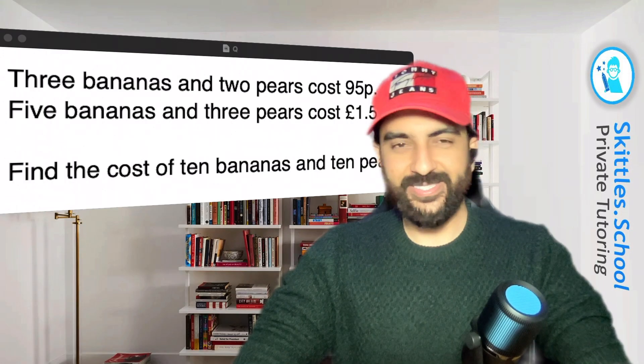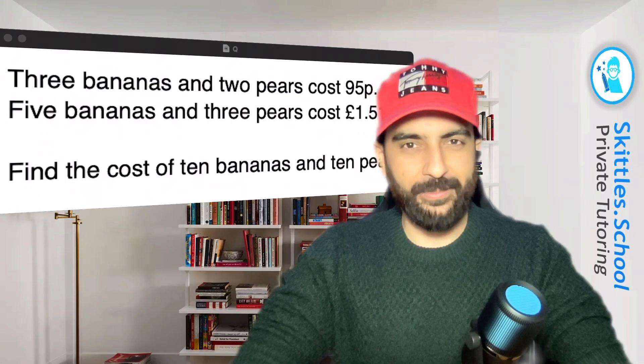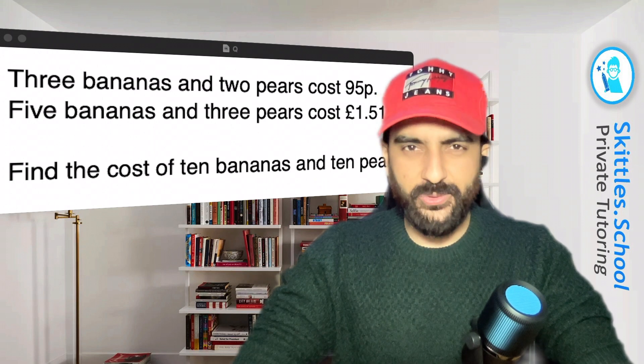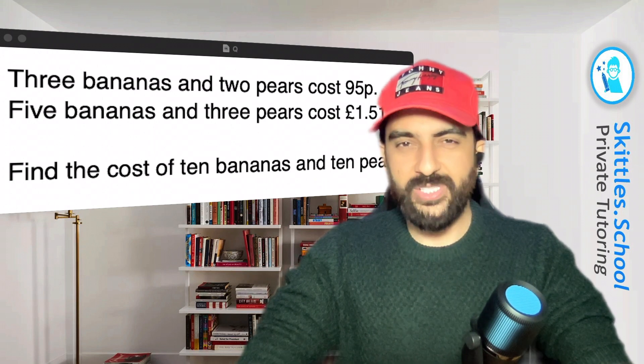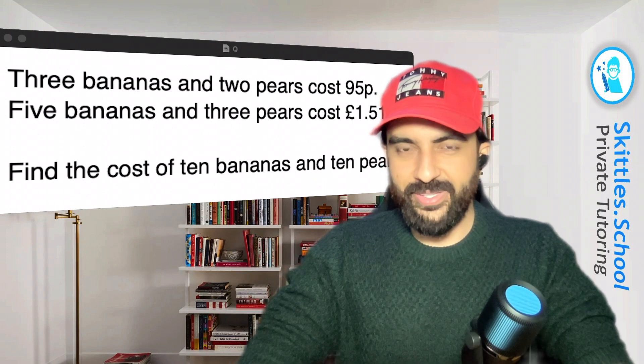We can change that back into pounds. So the answer is 390 or £3.90. And there it is. We found the cost of 10 bananas and 10 pears.